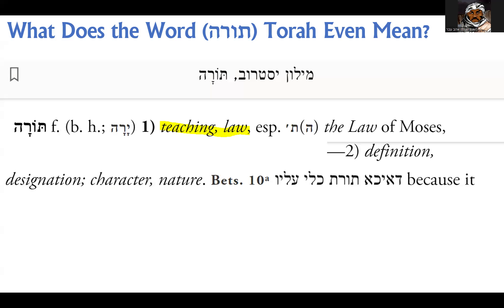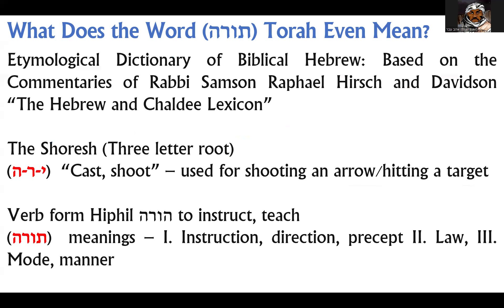A question could be, well, where do you get these definitions from? As I've mentioned in some other videos, ancient Hebrew worked on a system of three-letter roots, meaning that words get their definitions from three-letter roots, generally speaking, unless they're words that come from other cultures used to describe things.